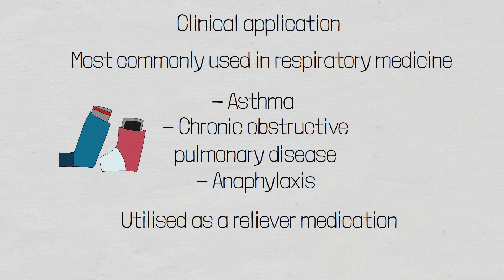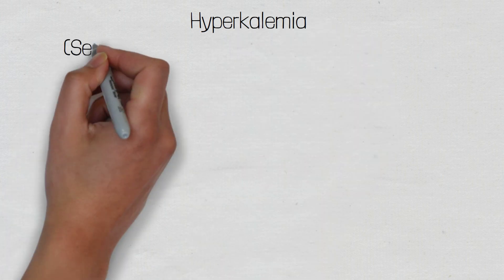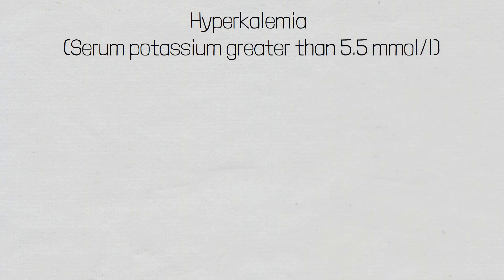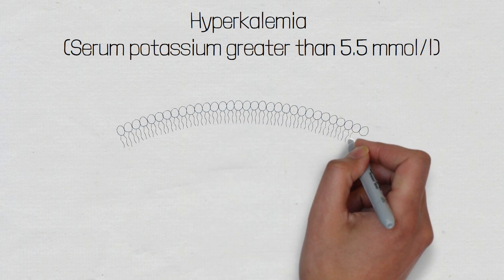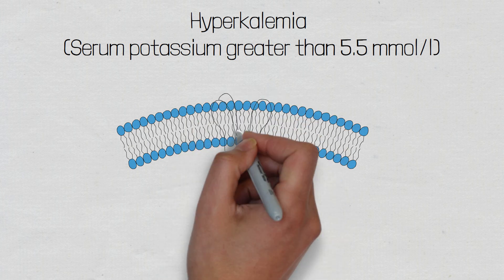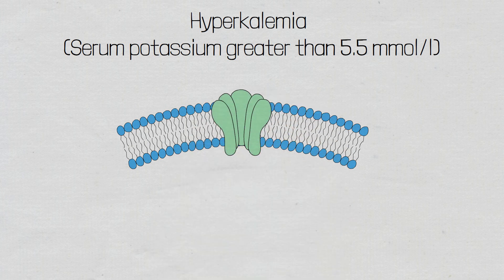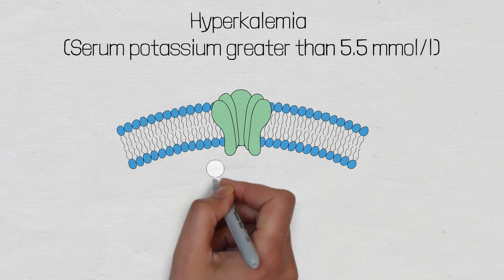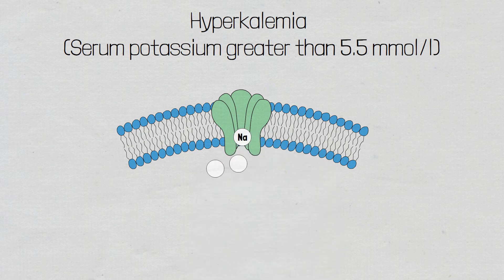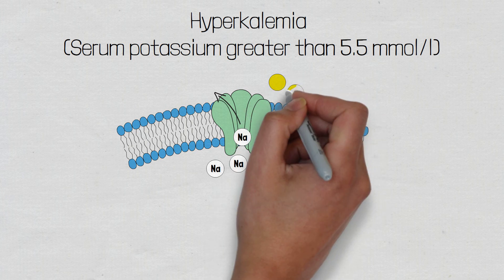Another use for salbutamol is in the treatment of hyperkalemia. Salbutamol stimulates sodium-potassium pumps within cells, which, when activated, remove intracellular sodium and bring in extracellular potassium. This stimulation is achieved through several steps, including raised cyclic adenosine monophosphate levels. Sodium-potassium pump stimulation causes an immediate cellular influx of potassium, which reduces serum potassium levels.